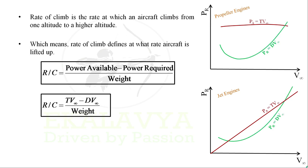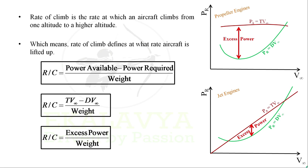Power Available (T times V infinity) minus Power Required (D times V infinity) gets us Excess Power, with which we have Rate of Climb as Excess Power divided by Weight.